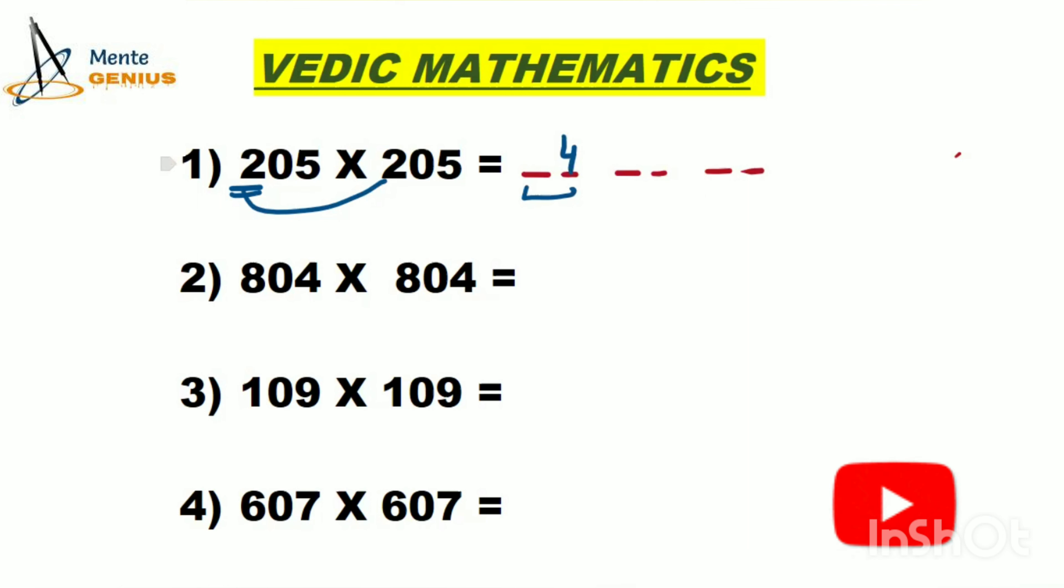When we have a single digit answer and need two places, we add a zero. So 25 occupies the last two places. For the first two places, we square 2. 2 squared is 4, so we write 04 in the first two places.